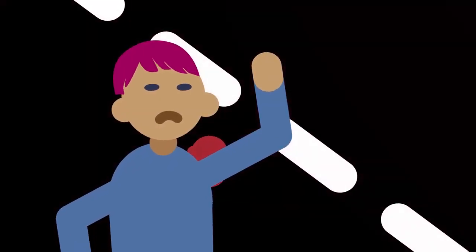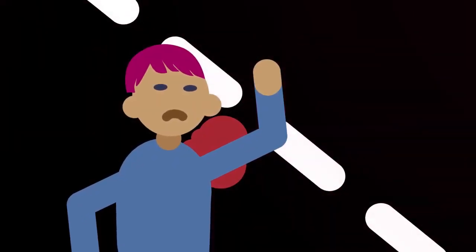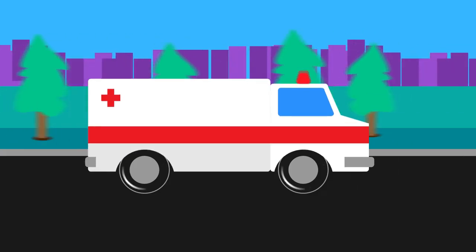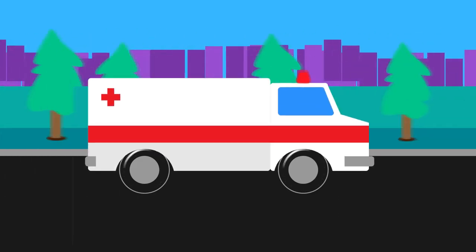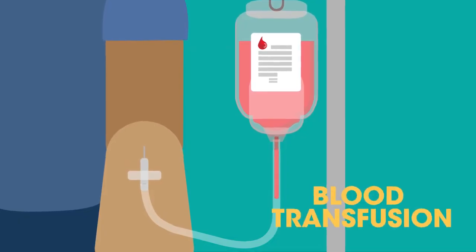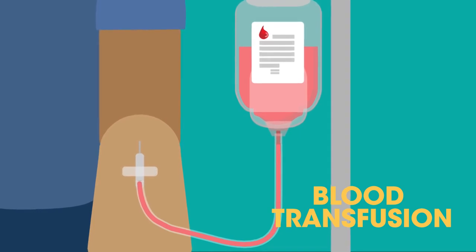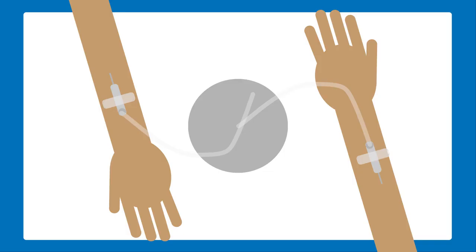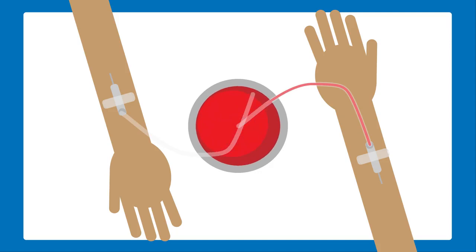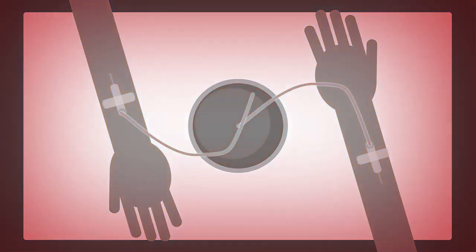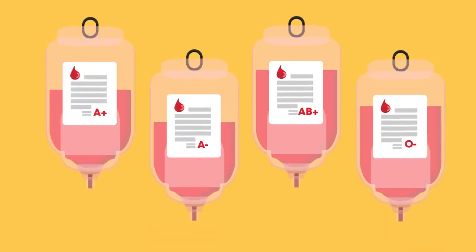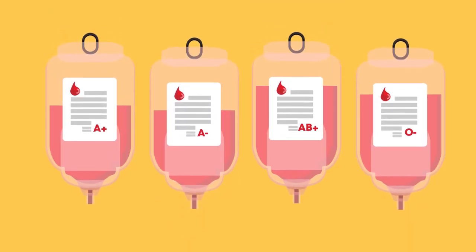Imagine you've been involved in an accident. You're bleeding and rushed to hospital. Thankfully, you're given a blood transfusion to replace your lost blood. But you can't just have blood from any old donor. In fact, when doctors first attempted blood transfusions in the 17th century, they were unsuccessful and patients died. How do medical teams now know what blood to give to which patient?